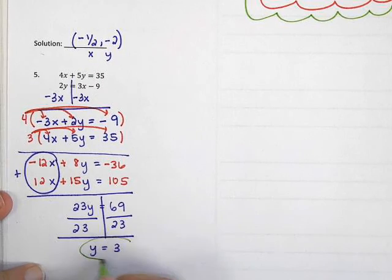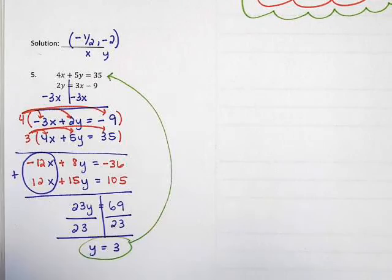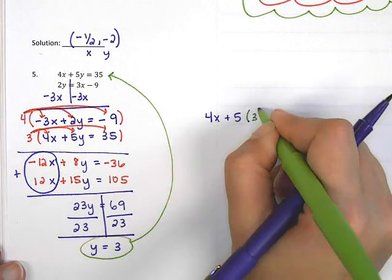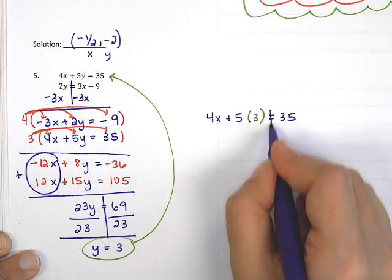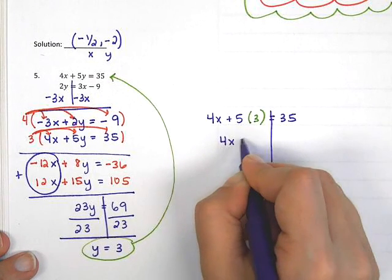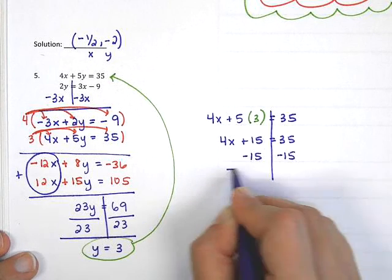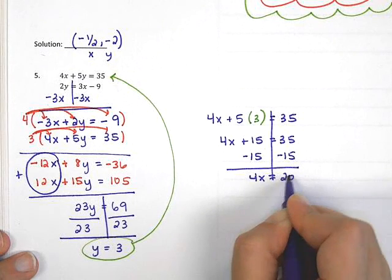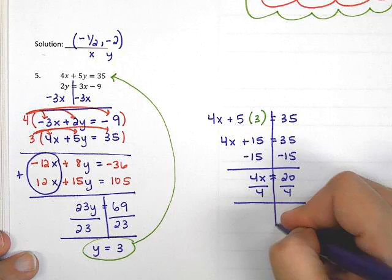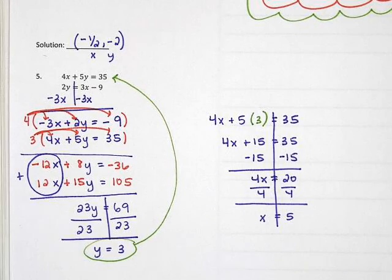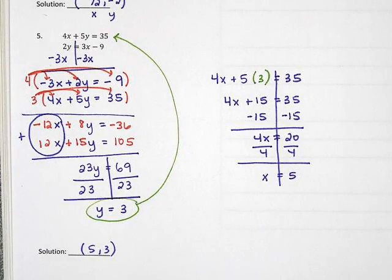I take y equals 3 and plug it into the original problem: 4x plus 5 times 3 equals 35. 5 times 3 is 15, so 4x plus 15 equals 35. Subtracting 15 on both sides gives 4x equals 20. Dividing by 4 gives x equals 5. My final answer is 5, 3. This is an example where you need to multiply both equations by a number in order to make something cancel.